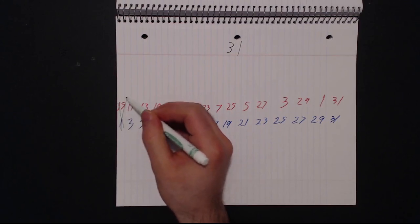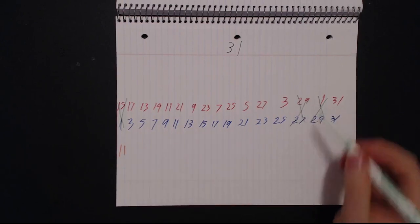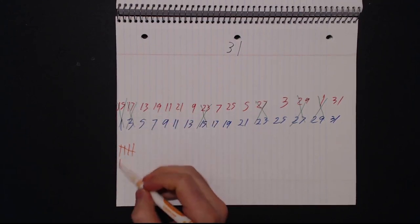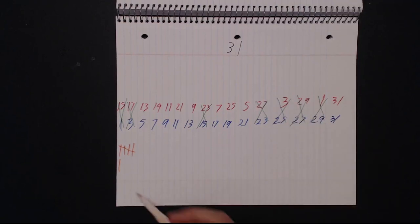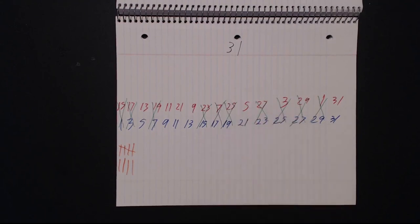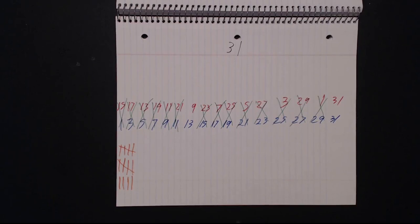And start crossing out the columns starting from the left. Once you got to the beginning, shift over by one column. Do this until all the columns are crossed except for 31. All of the tick marks match. That means it's prime.